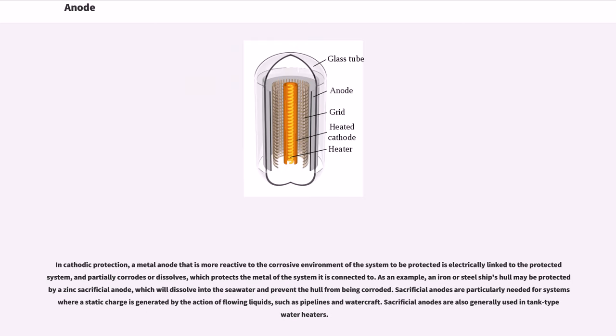In cathodic protection, a metal anode that is more reactive to the corrosive environment of the system to be protected is electrically linked to the protected system, and partially corrodes or dissolves, which protects the metal of the system it is connected to. As an example, an iron or steel ship's hull may be protected via zinc sacrificial anode, which will dissolve into the seawater and prevent the hull from being corroded. Sacrificial anodes are particularly needed for systems where a static charge is generated by the action of flowing liquids, such as pipelines and watercraft.